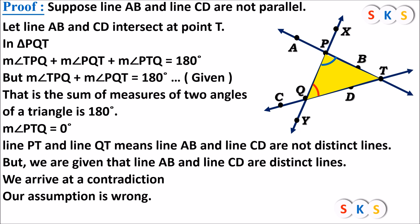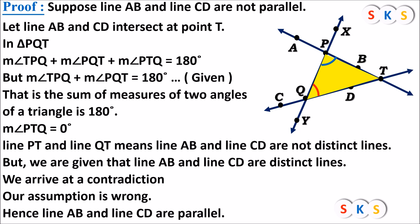I am getting that line AB and line CD are the same lines, not distinct — but that contradicts the given. Hence my assumption is wrong. I had assumed line AB and line CD are not parallel, but that is wrong. Hence, line AB and line CD are parallel.